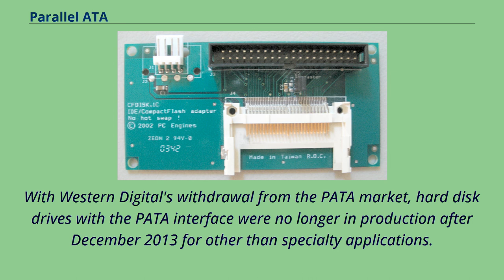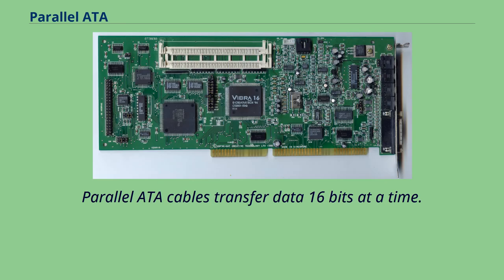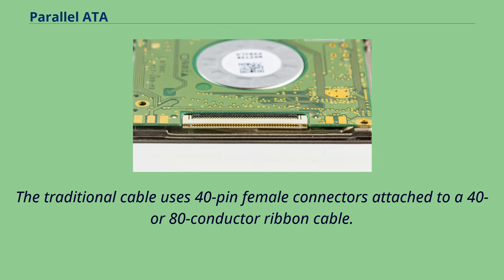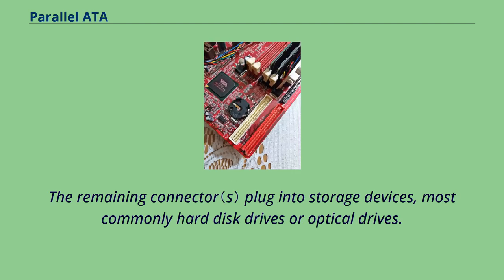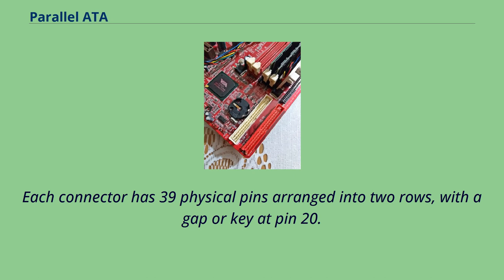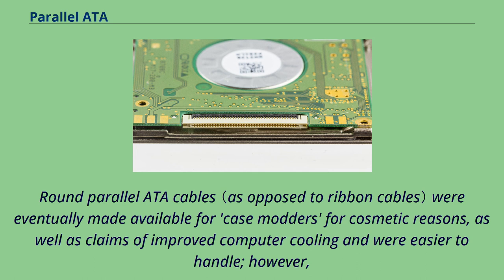Parallel ATA cables transfer data 16 bits at a time. The traditional cable uses 40-pin female connectors attached to a 40 or 80-conductor ribbon cable. Each cable has two or three connectors, one of which plugs into a host adapter interfacing with the rest of the computer system. The remaining connectors plug into storage devices, most commonly hard disk drives or optical drives. Each connector has 39 physical pins arranged into two rows, with a gap or key at pin 20. Round Parallel ATA cables were eventually made available for case modders for cosmetic reasons, as well as claims of improved computer cooling and easier handling; however, only ribbon cables are supported by the ATA specifications.